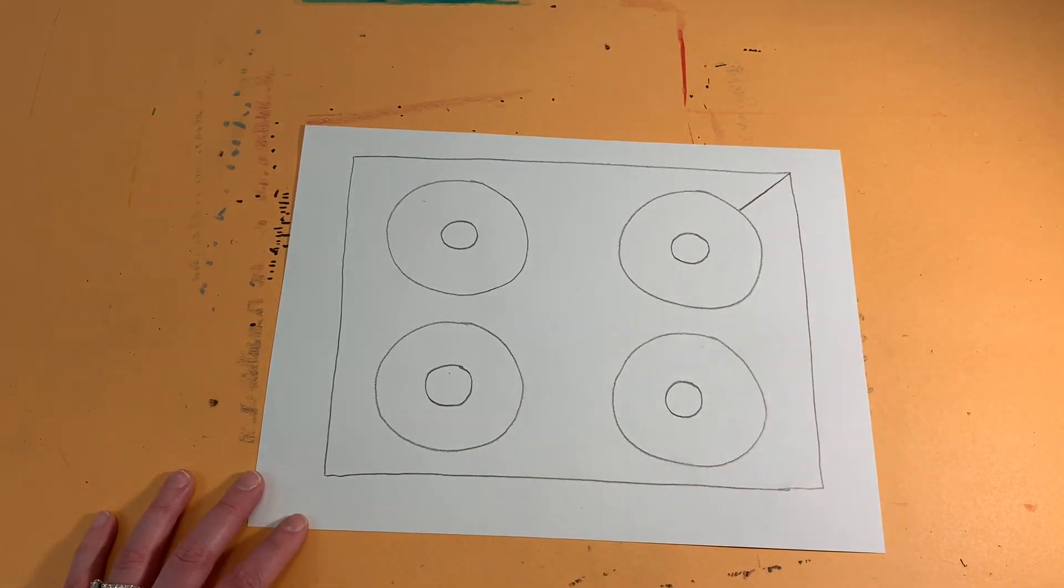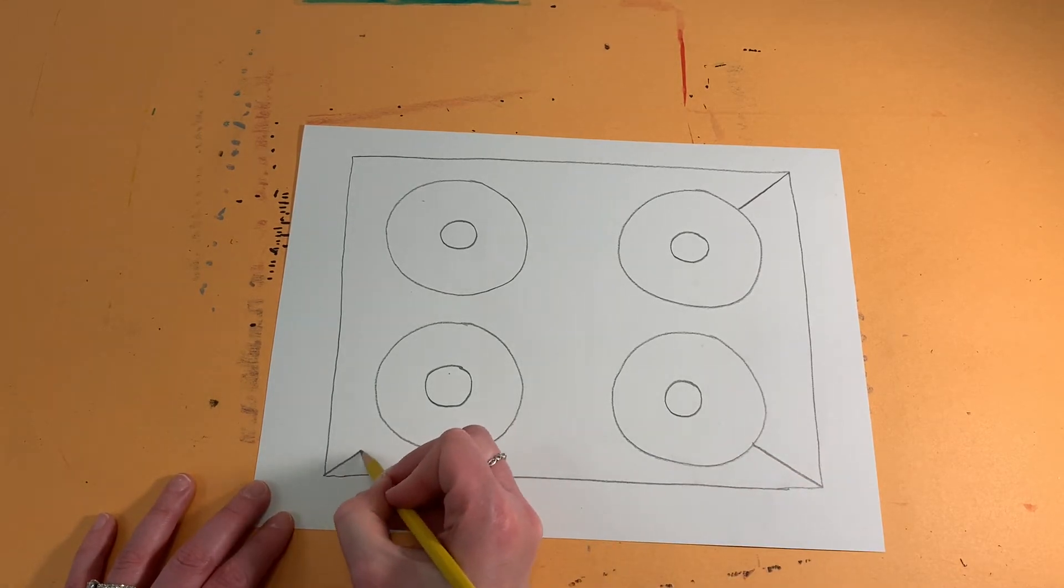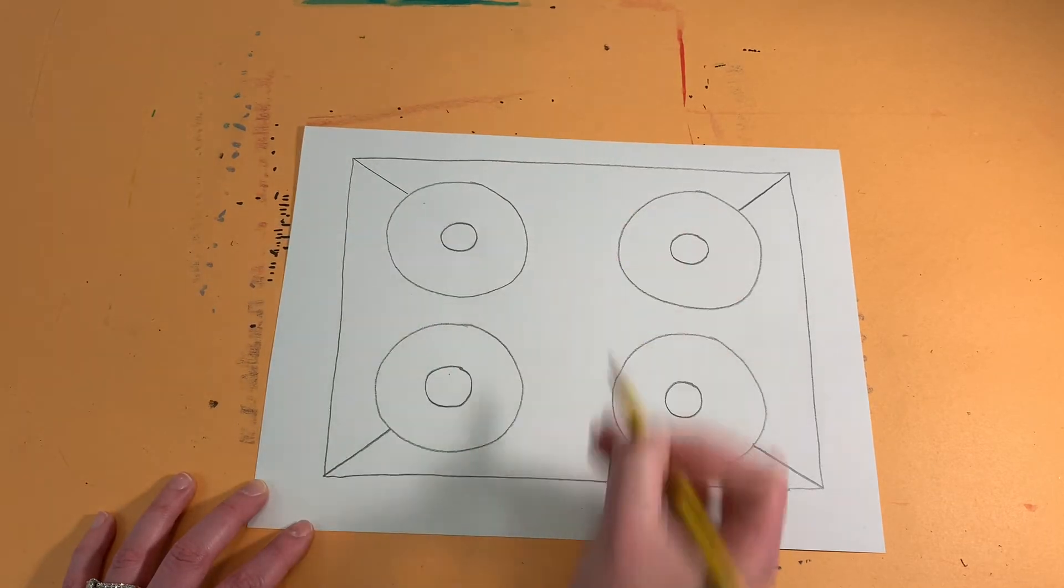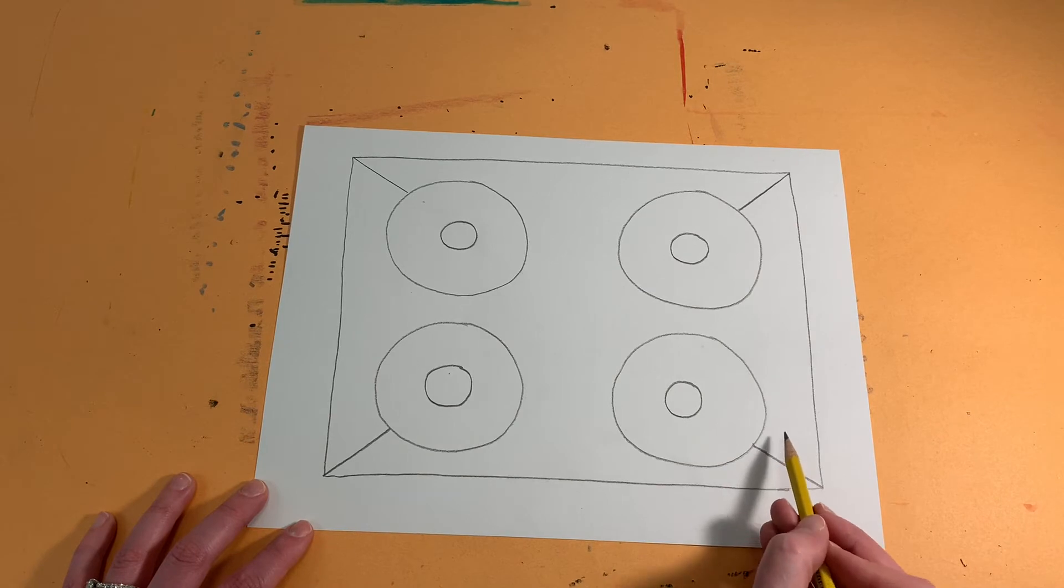So one diagonal here, one diagonal here, another here, and a final one here. Now this represents the sides of the box and the corners of the box.